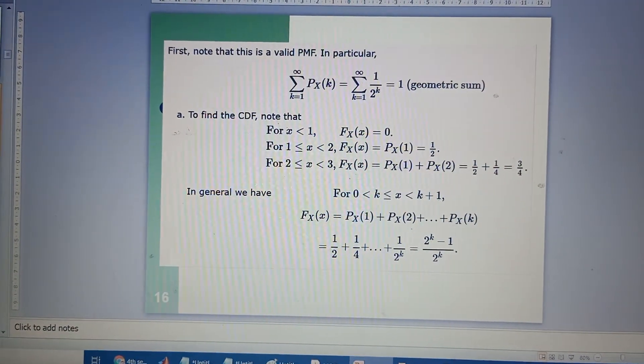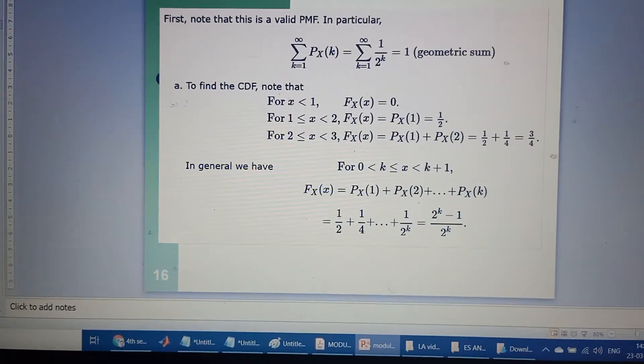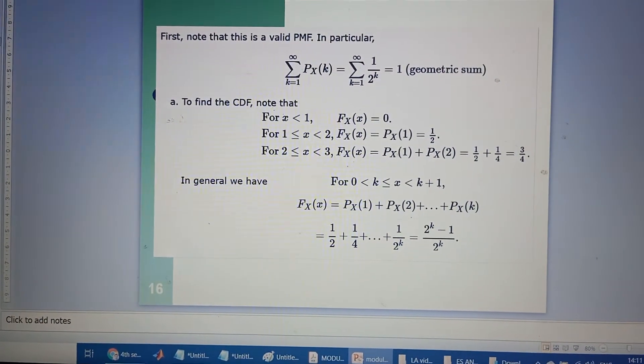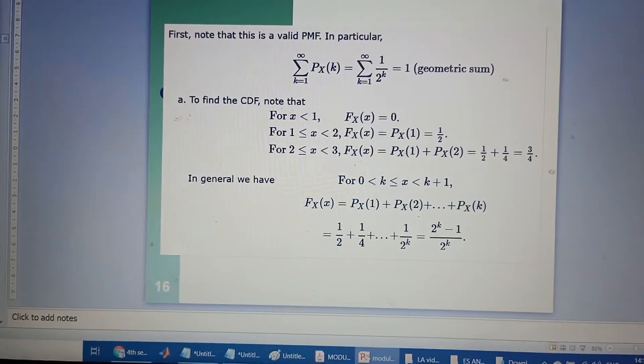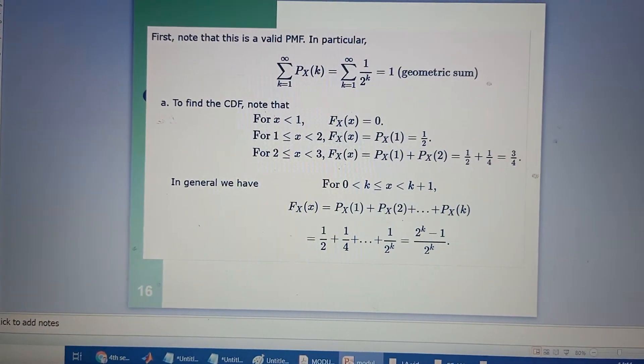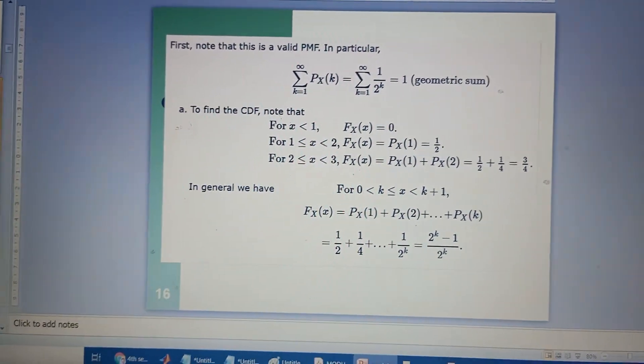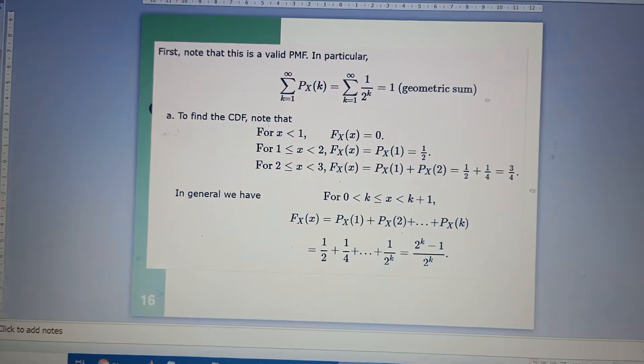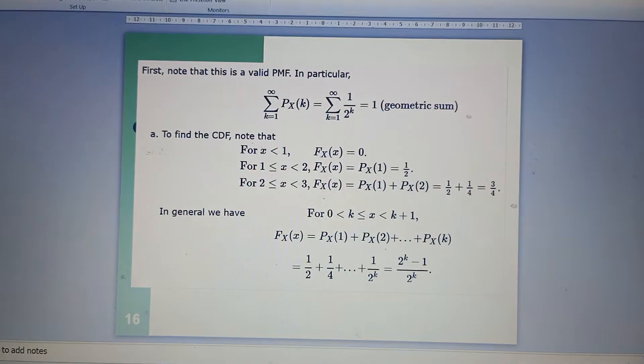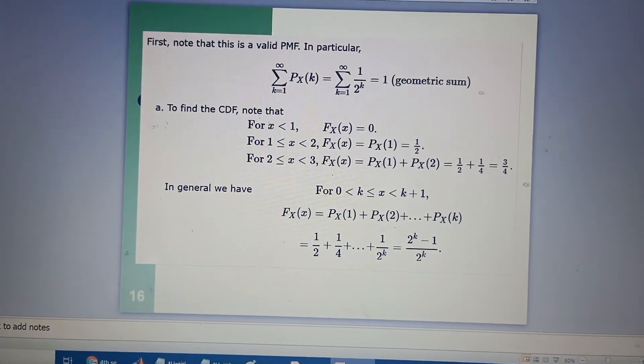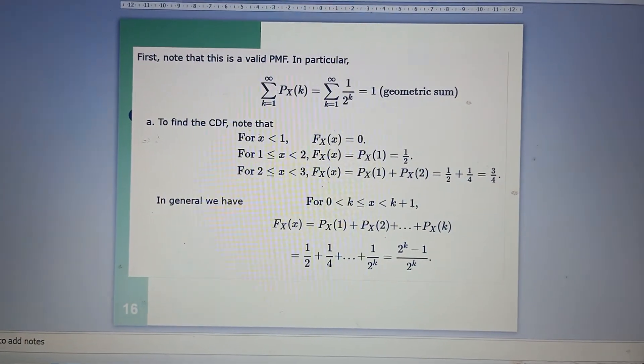For x being greater than or equal to 2 and less than 3, we will get F_X(x) equals P_X(1) plus P_X(2). That is what you need to keep in mind—if it is less than 3, it will be added with P_X(1) and then P_X(2). P_X(0) will be equal to 0, so let us not bother about that. Therefore you get 1 over 2 plus 1 over 4, which equals 3 by 4.